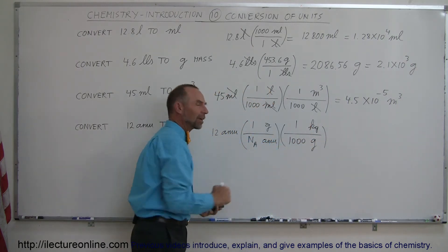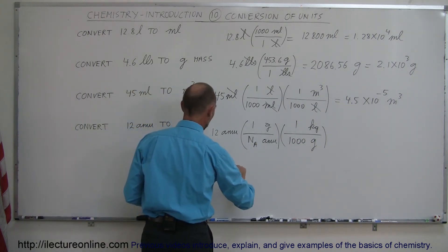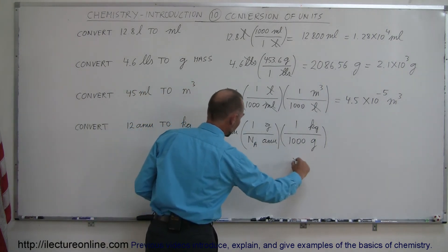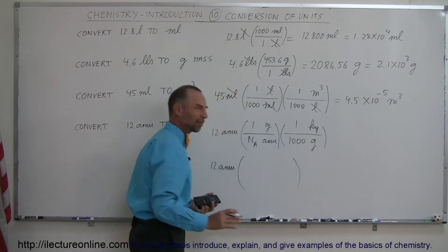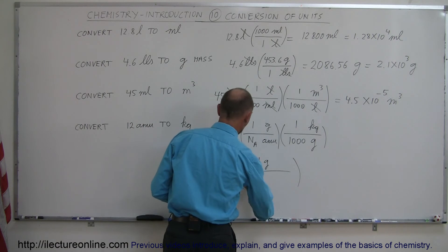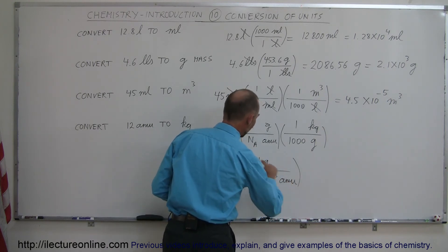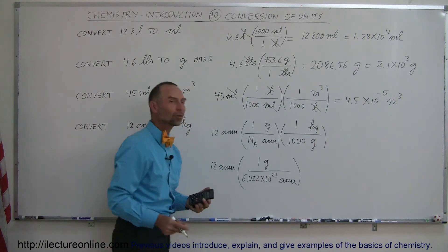What is Avogadro's number? Let's write it again. We have 12 AMUs times the ratio—I'm going to leave more room because Avogadro's number is very big. One gram divided by 6.022 times 10 to the 23rd. That is Avogadro's number times AMUs. So one gram is this many AMUs.